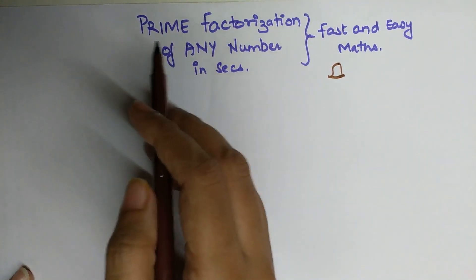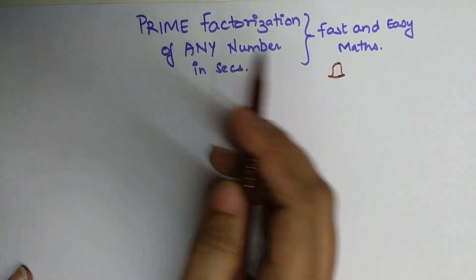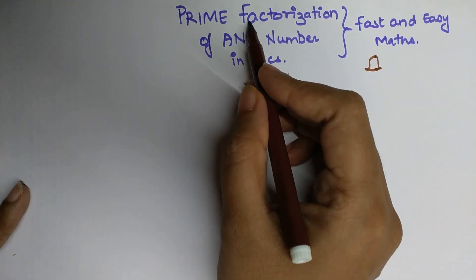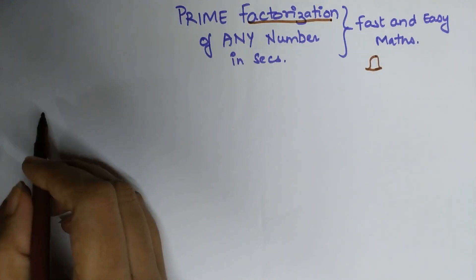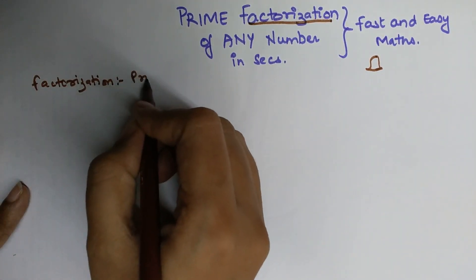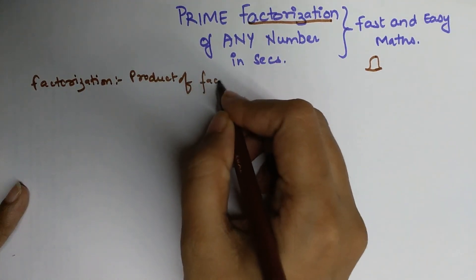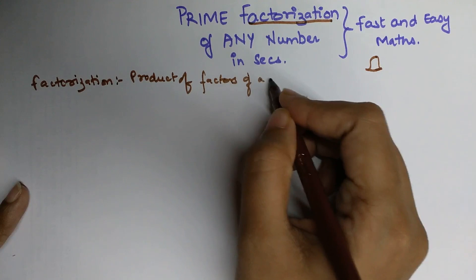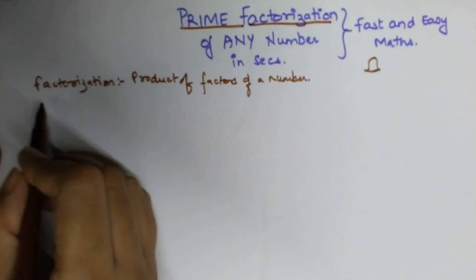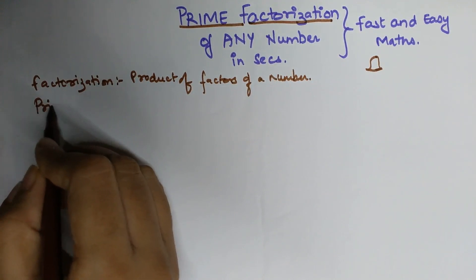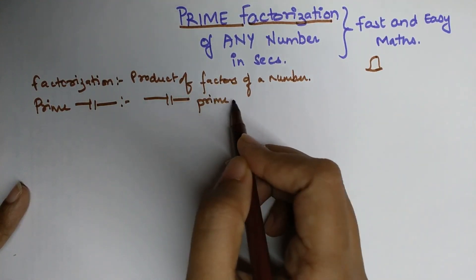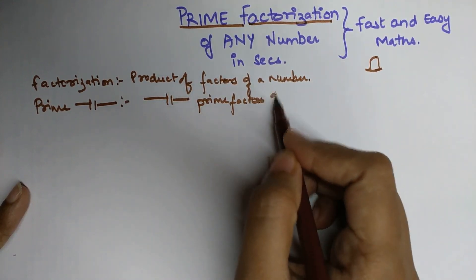Today we are going to discuss a method in which you can find the prime factors of any number in a matter of seconds. But before beginning, let's first understand what factorization is. Factorization is basically the product of factors of a number. And as the name suggests, prime factorization will be the product of prime factors of a number.